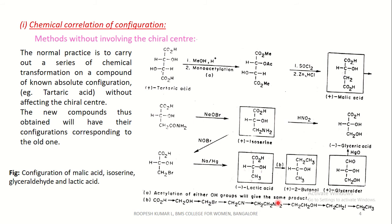There are many methods to determine absolute as well as relative configuration. One such method is the chemical correlation of configuration. The first method is chemical correlation without involving the chiral center. The normal practice is to carry out a series of chemical transformations on a compound whose absolute configuration is known.